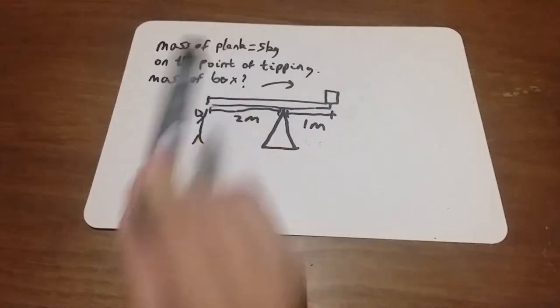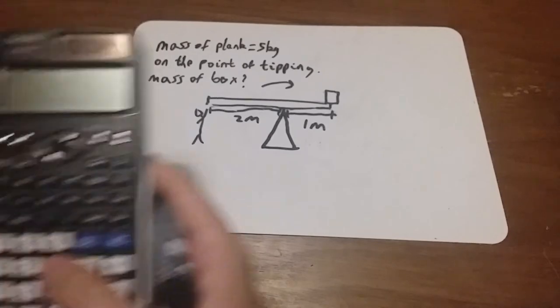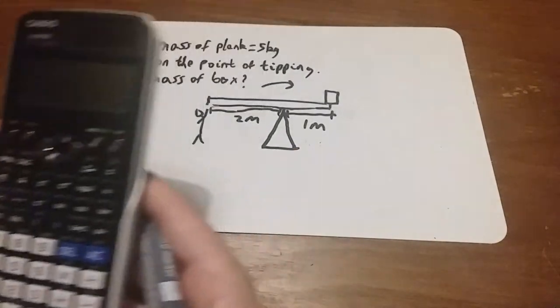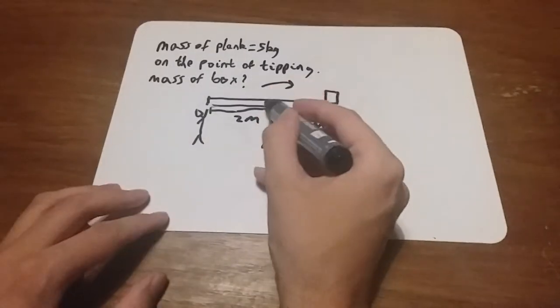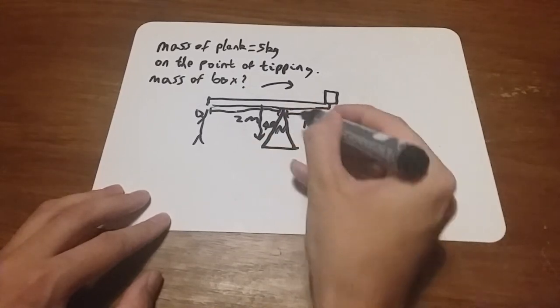We know the mass of the plank is five kilograms. If we times that by 9.8, five times 9.8 equals 49, that's 49 newtons. Because it's a uniform plank, the weight acts at the center of mass, so that's 49 newtons. We know it's a distance of 1.5 meters from this end.